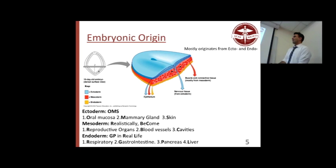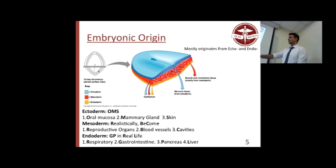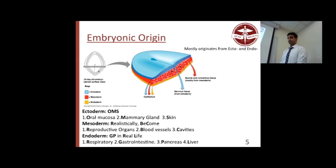For ectoderm: oral mucosa, skin, and glands. Mesoderm — you can just read it. Definitely know that oral mucosa comes from ectoderm.